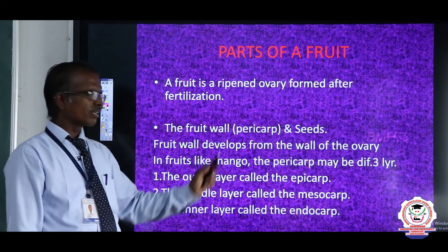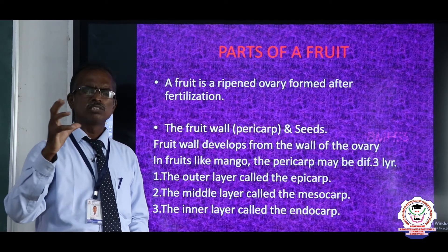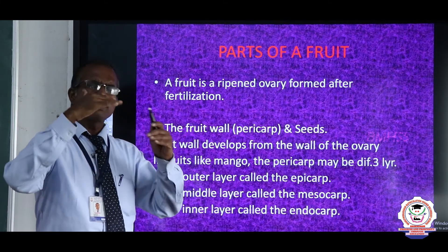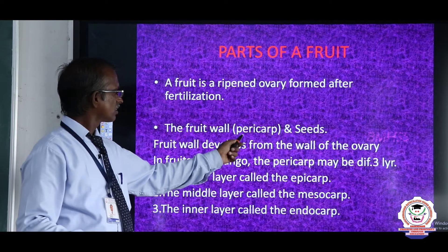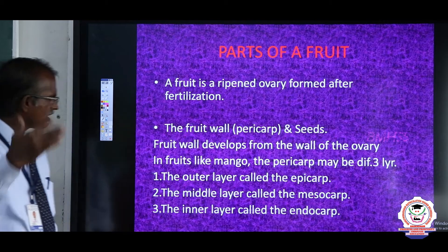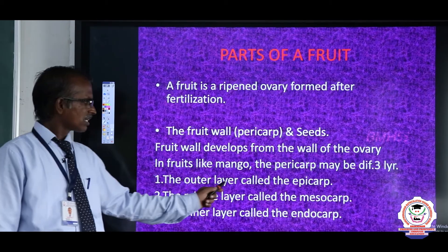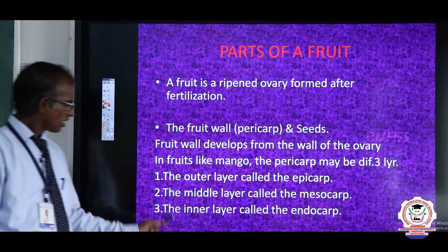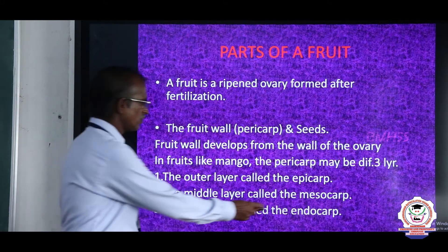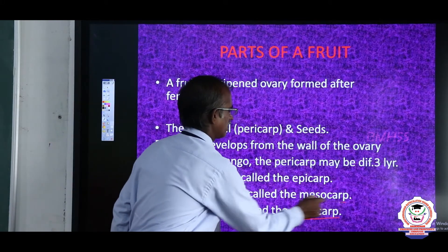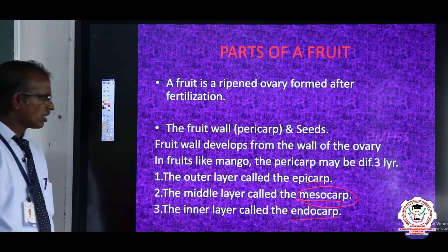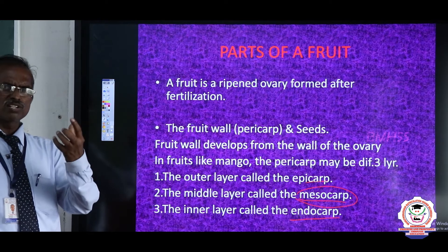In fruits like mango, if you take the mango - it is the season now, the national fruit of our country - the pericarp is differentiated. Pericarp is the technical word; the common word is fruit wall. It may be differentiated into three layers: outer layer is called epicarp, middle layer is called mesocarp, and inner layer is called endocarp. The edible part of mango is mesocarp, which is fleshy and juicy in nature.